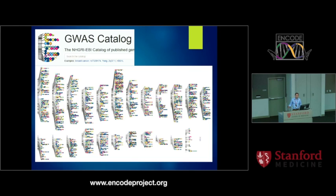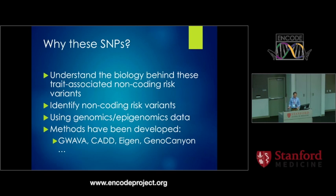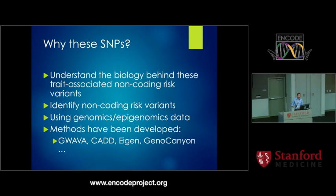The big surprise is that a majority of these variants are non-coding, which is a big problem because, like 10 years ago before ENCODE, our understanding of the non-coding region was very limited. The huge challenge is: what is the biology behind these trait-associated non-coding risk variants, and how can we identify them?